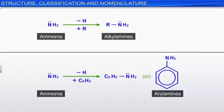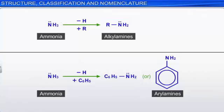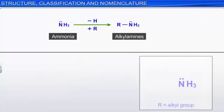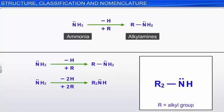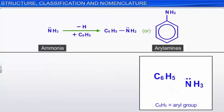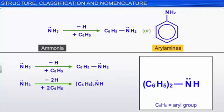Alkyl or aryl derivatives of ammonia are known as amines. Amines formed by the replacement of one or more hydrogen atoms of an ammonia molecule by alkyl groups are called alkyl amines. Those formed by the replacement of hydrogen by aryl groups are called aryl amines.